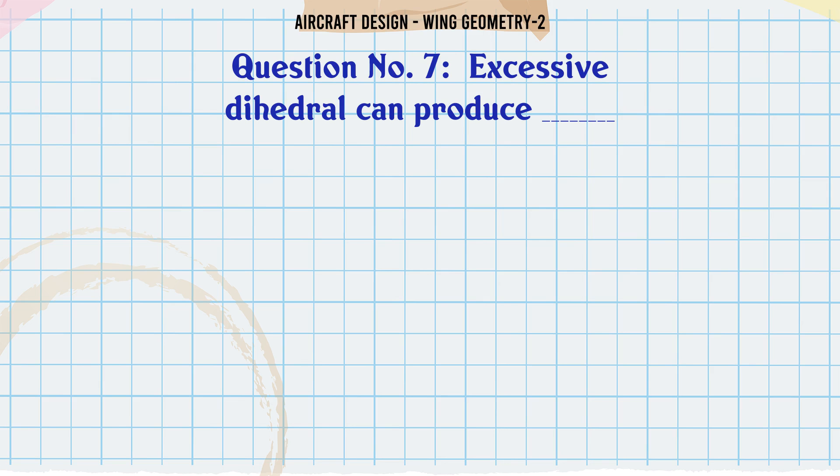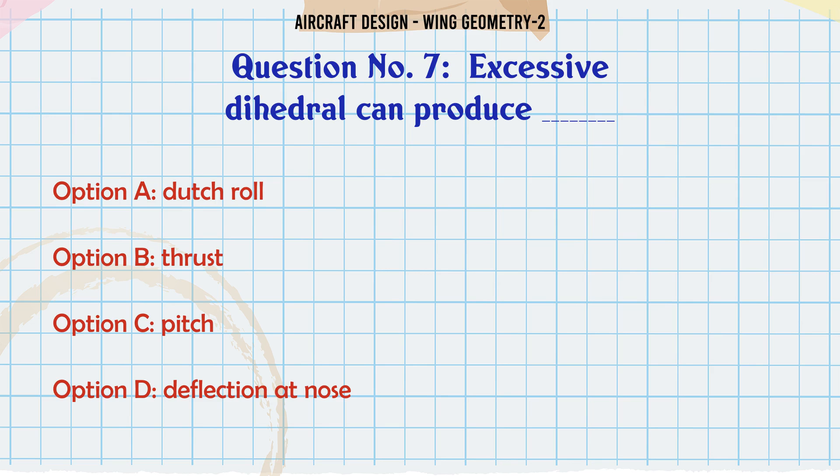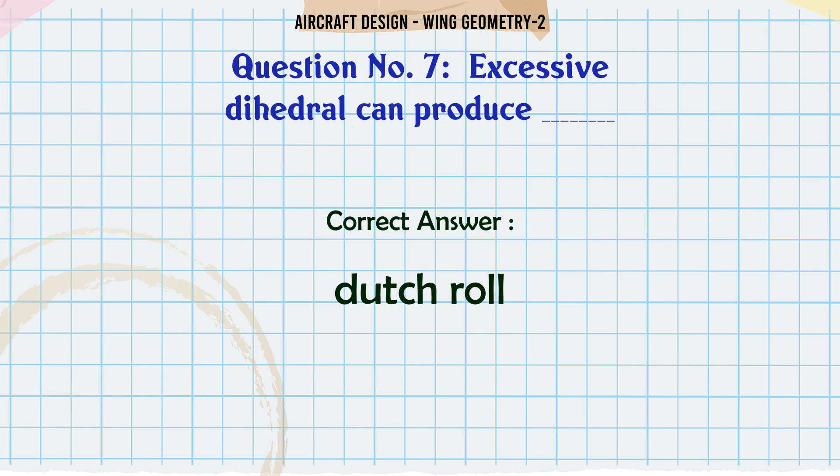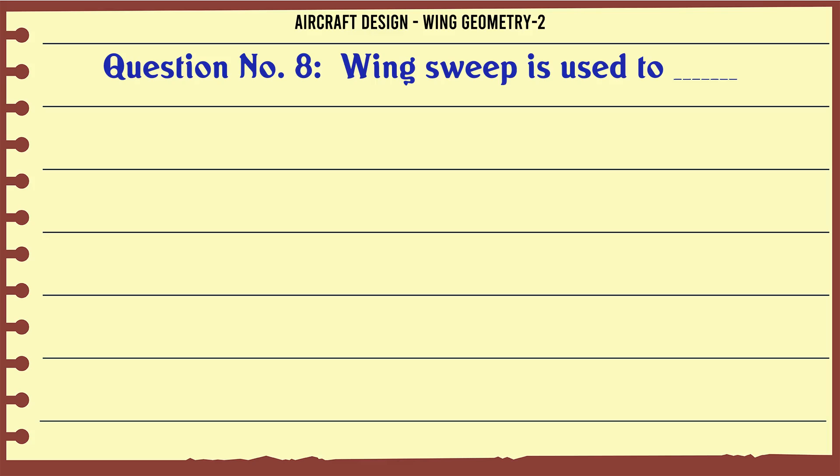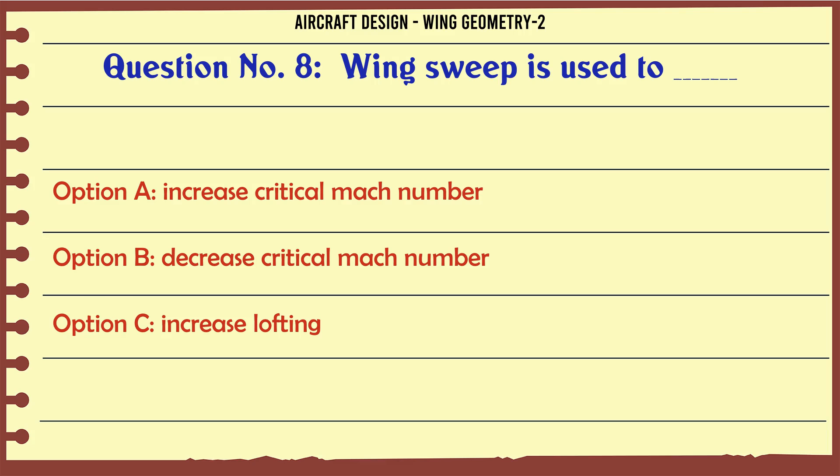Excessive dihedral can produce: A: Dutch roll, B: Thrust, C: Pitch, D: Deflection at nose. The correct answer is Dutch roll. Wing sweep is used to: A: Increase critical Mach number, B: Decrease critical Mach number, C: Increase lofting, D: Increase drafting. The correct answer is increase critical Mach number.